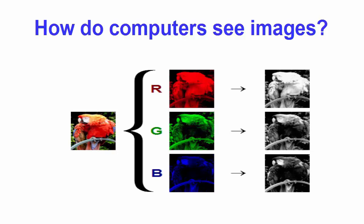One type is called grayscale images and the other is called colored images. In grayscale images, each pixel represents the intensity of only one shade — that means how bright or dark the pixel is. In other words, it has only one channel. On the right-hand side you can see a grayscale image, and on the left-hand side you can see a colored image.